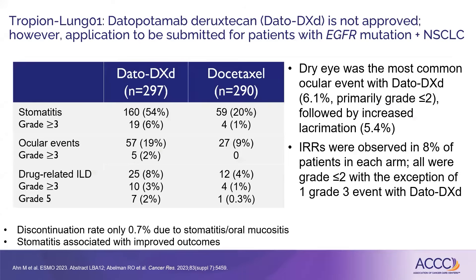Let's talk about some drugs under investigation. This is DATO-DXD, looking at the Tropion Lung-01 trial toxicities versus docetaxel. Some of the main things we saw with DATO-DXD were stomatitis in over half of patients — and interestingly, development of stomatitis was actually associated with improved outcomes. Ocular events were also seen, with dry eye being the most common, along with dry, irritated, and itchy eye symptoms. We also see drug-related ILD here, not quite to the percentages of TDXD, but something that can happen — and note there was 2% grade 5 deaths from this. The discontinuation rate due to stomatitis was 0.7%, so most patients did not have to discontinue, but some required dose reduction or hold.